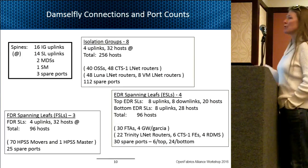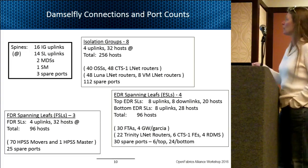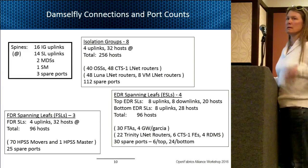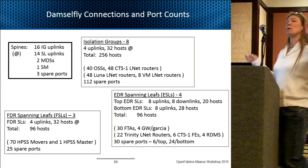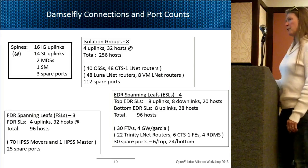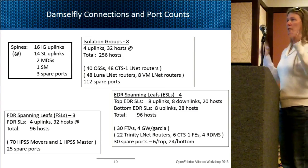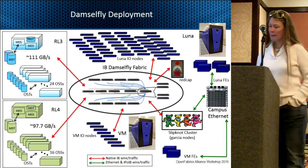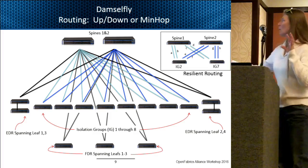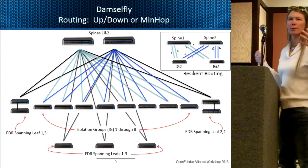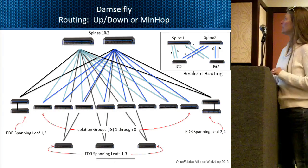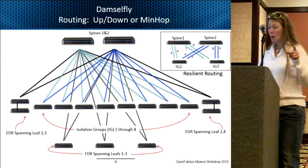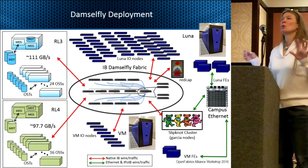There's a lot of resilient routing built in: if you want to go from one IG to another, you have eight route choices; from a spanning leaf to an IG, there are 16 or more. The Damselfly is deployed and in production. We have two Lustre file systems — RL3 and RL4, Red L3 and Red L4. It came in as a 40-OSS system and we split it because 40 is not divisible by eight, and we also wanted two file systems for failover — you don't want one massive file system down while you're working on it.